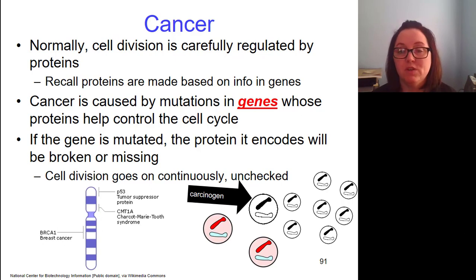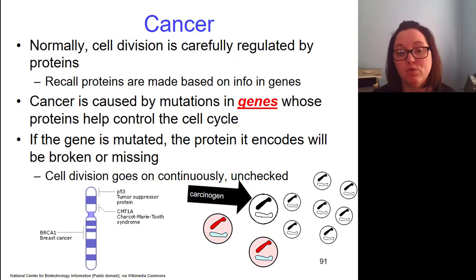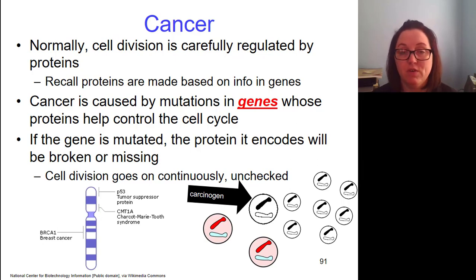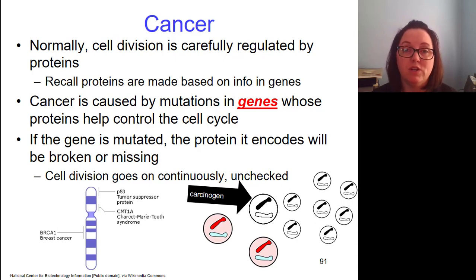You might have heard of some of the genes and protein products used to regulate the cell cycle. P53 is a very common protein that regulates the cell cycle, and when its gene is damaged we get tumor formation. BRCA1 is another one people have heard of — this gene produces a protein that also regulates mitosis, and when that gene is mutated it can result specifically in breast cancer.